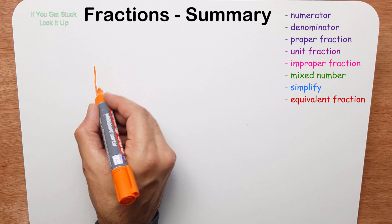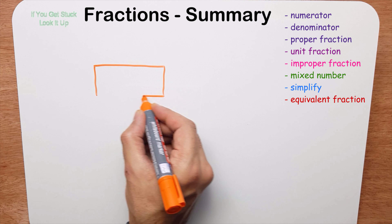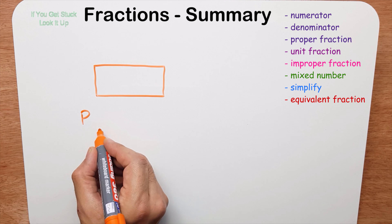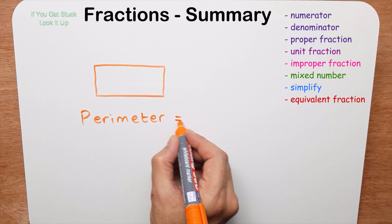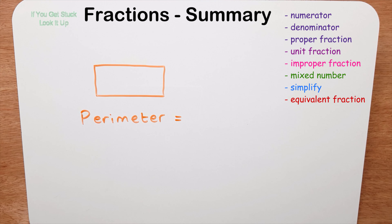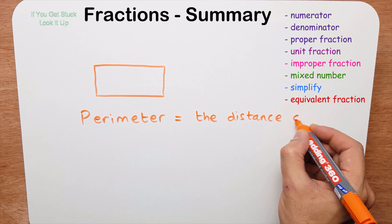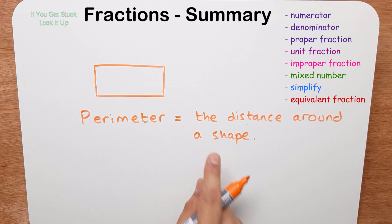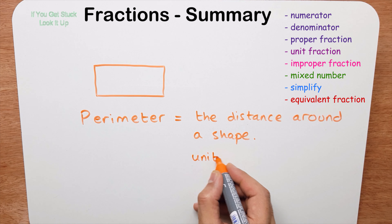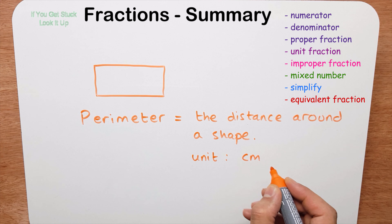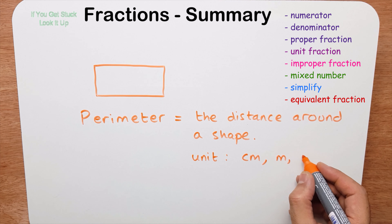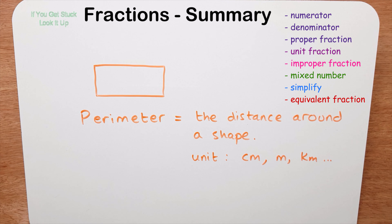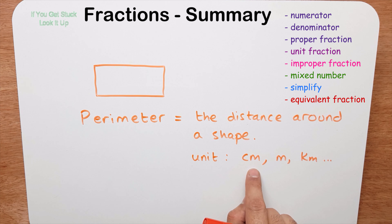Now this causes a lot of confusion, so pay attention. We looked at perimeter — perimeter is the distance around a shape. The units we measure it in are centimeters, meters, kilometers, and so on. Remember, perimeter is not measured in centimeters squared or square centimeters — that's a mistake students always make.